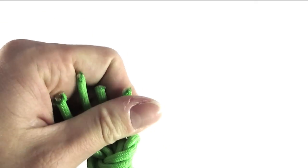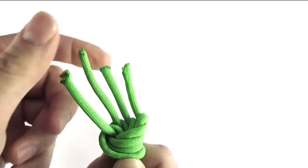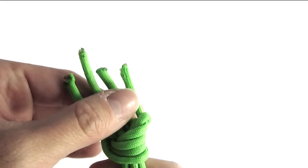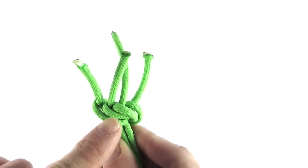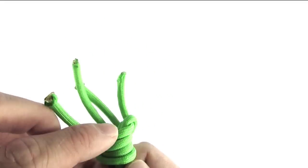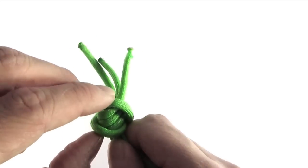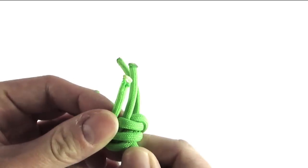And once you have them about this tightened, meaning that they are still quite loose, we're going to adjust the cords on the left to the cords on the right by simply taking the first one and placing it to the right.